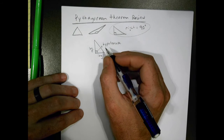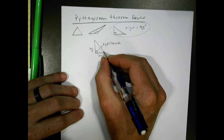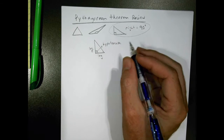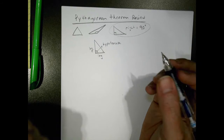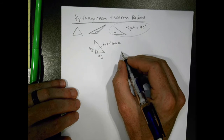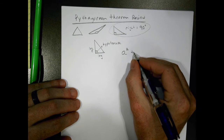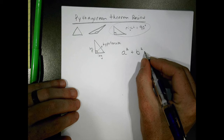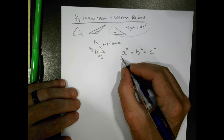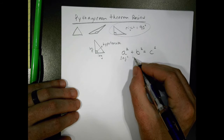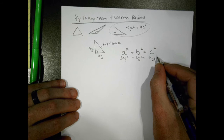So that's our hypotenuse — the side directly across from the right angle. The shorter sides are always called the legs, and the longer side is the hypotenuse. It's always going to be the longer one. The Pythagorean Theorem tells us that a leg squared plus another leg squared equals the hypotenuse squared.